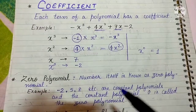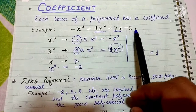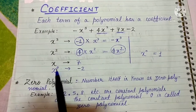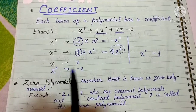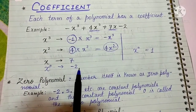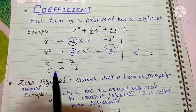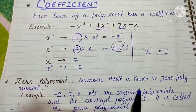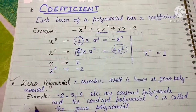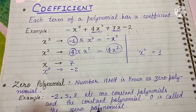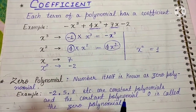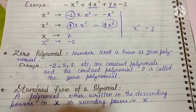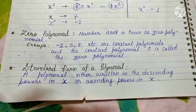As we saw, the last term was minus 2 — a constant — which is the coefficient of x raised to the power 0. This leads us to constant polynomials: values like minus 2, 5, or 8 are constant polynomials. The constant polynomial 0 is called the zero polynomial.